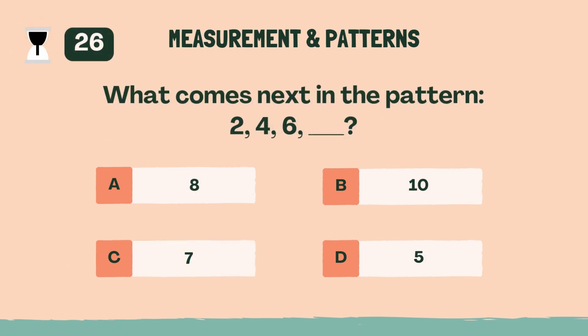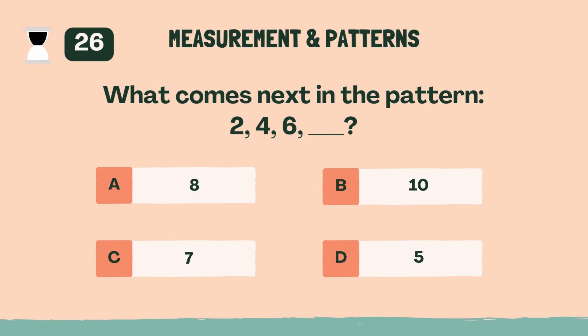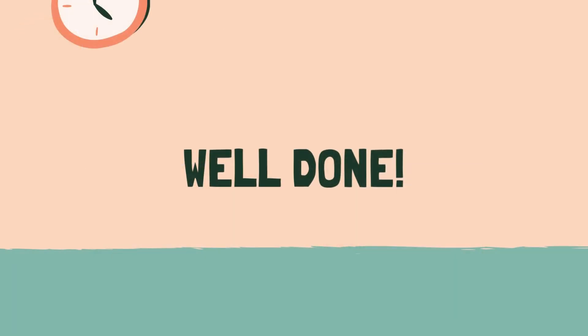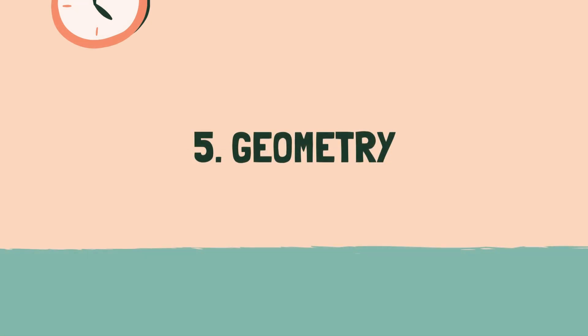What comes next in the pattern? 2, 4, 6. A, 8. Well done. Let's move on to the next category. Category 5: Geometry.